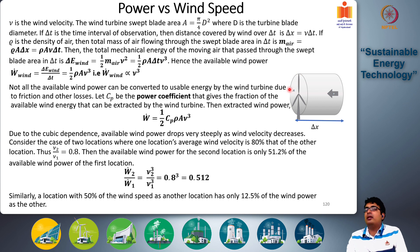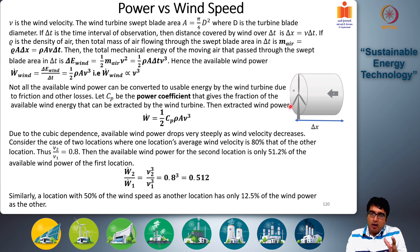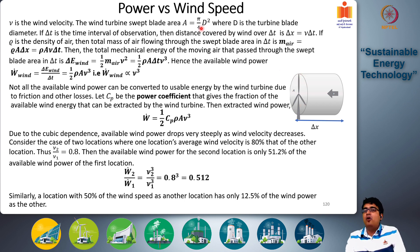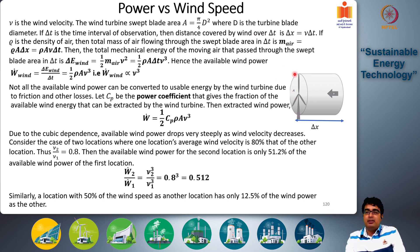The turbine blades rotate in a circular arc, so the total area swept by the rotating blades is given by pi times r squared, or equivalently pi over 4 times d squared, where d is the turbine blade diameter and r is the turbine radius.